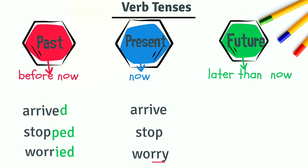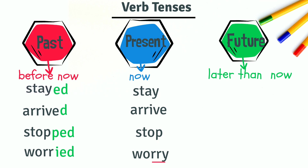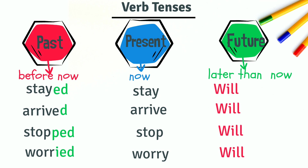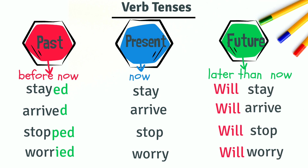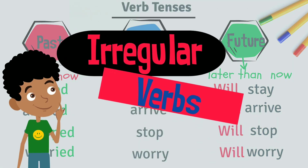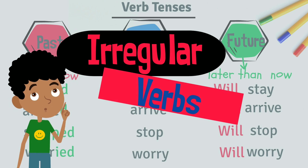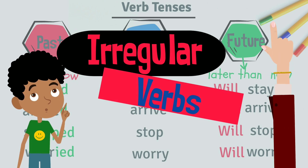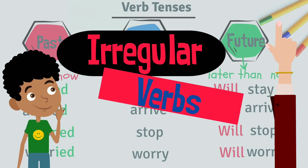But if the verb ends in a vowel and Y, like stay, simply add -ED. So, if you want to remember this rule, just remember these four verbs. Irregular verbs don't follow the rule, so you simply have to memorize them. Watch this video to learn more about irregular verbs.